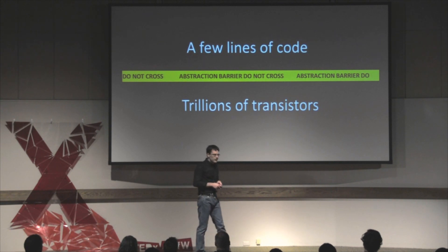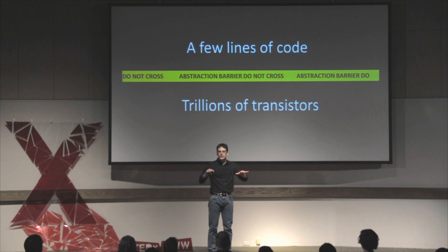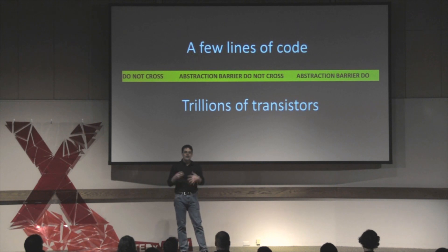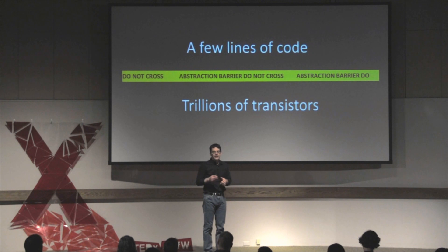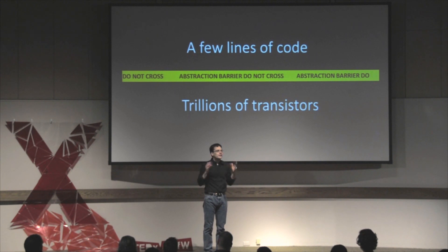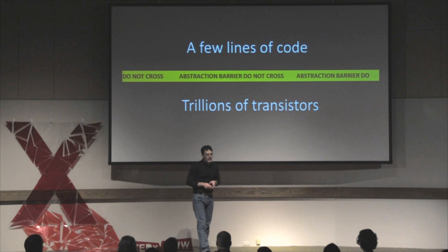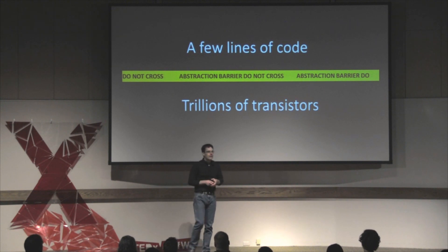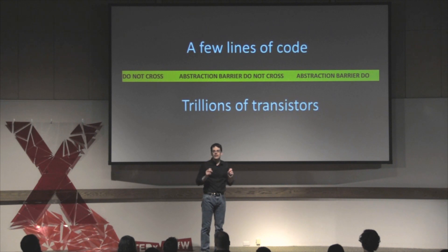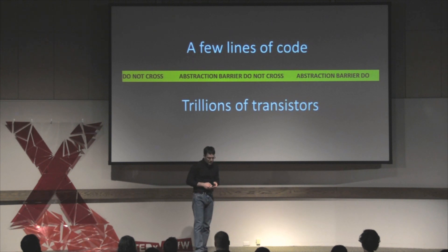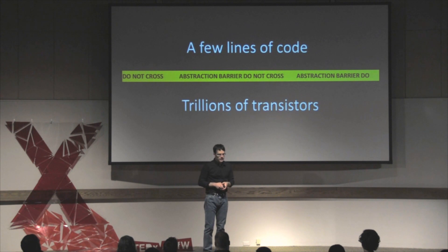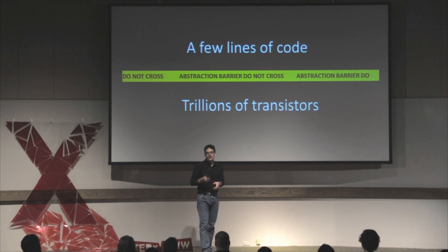Why are computers so easy to program? It's because we've figured out where to put these abstraction barriers so that you don't need to think about all the stuff that's happening inside a computer. Humans can really only keep a few ideas in their head at any given time, and if you have to know about everything happening inside a computer, from the transistor all the way up to the programming language, you'll be completely paralyzed and you won't be able to be creative. The beauty of computers and computer languages is that you can write a few lines of code — it's almost like poetry — and it will get compiled down into behaviors for those transistors. I think this idea of abstraction can be applied to biology as well. We just have to figure out where that abstraction barrier is.